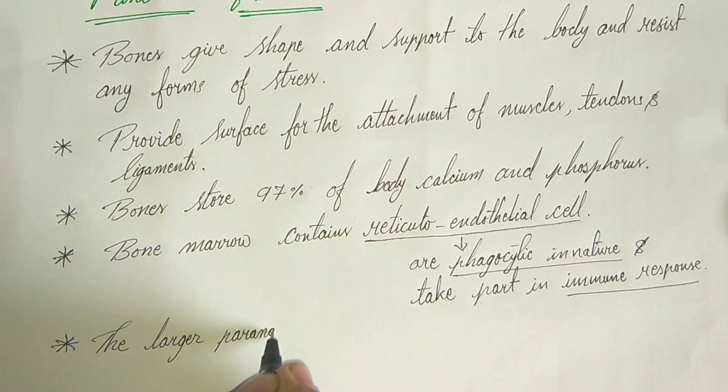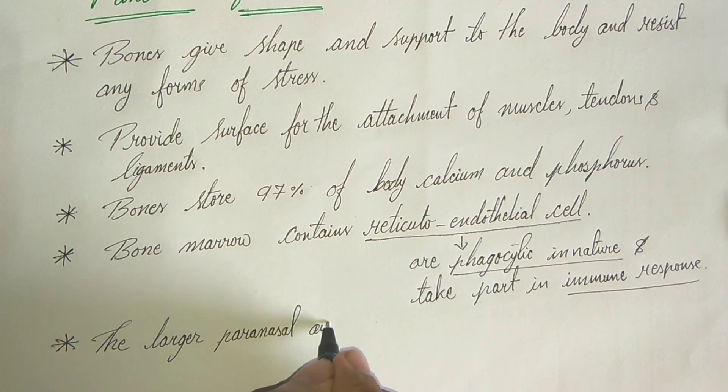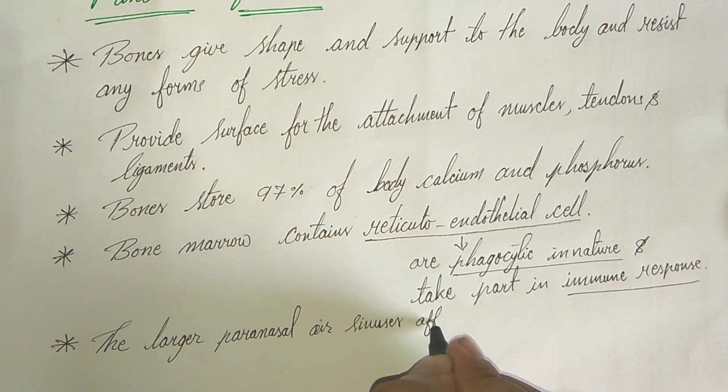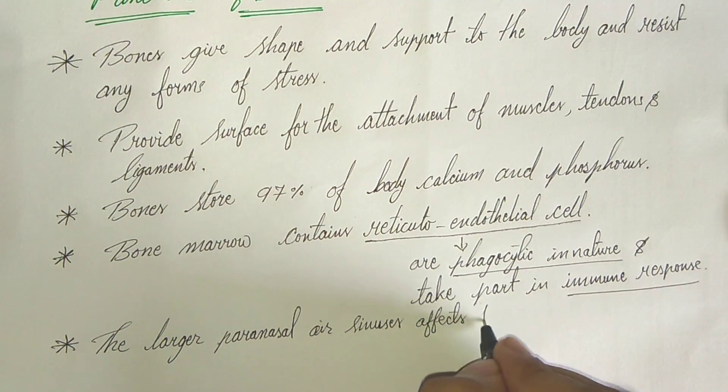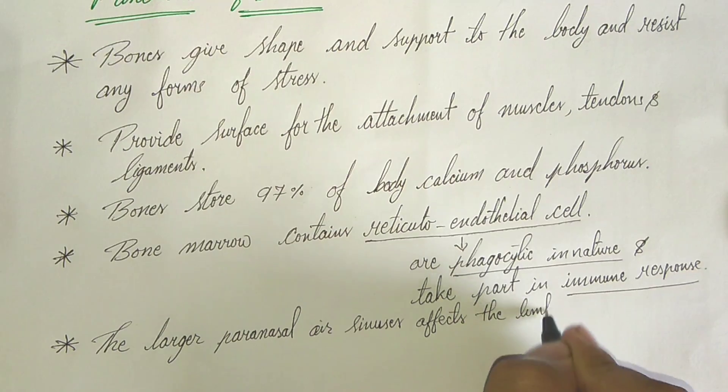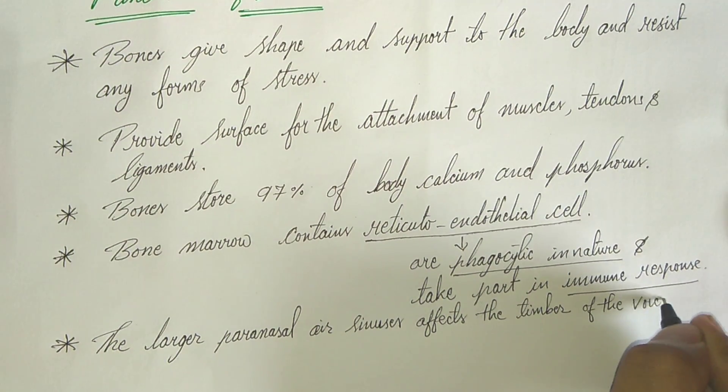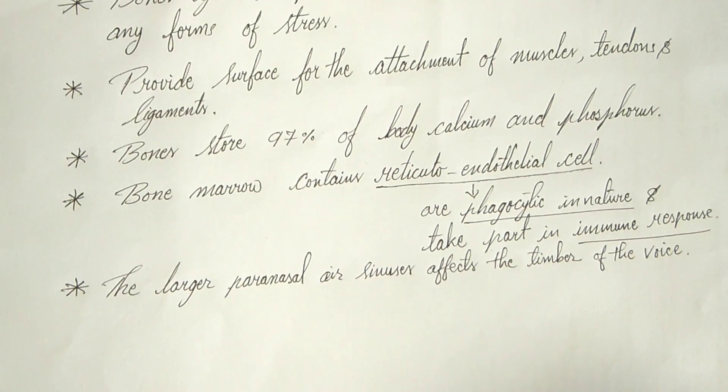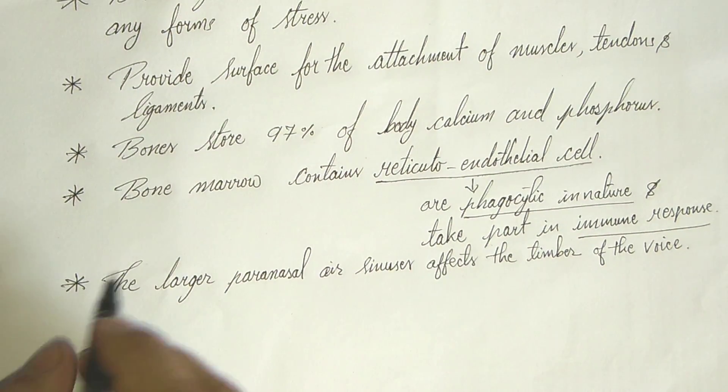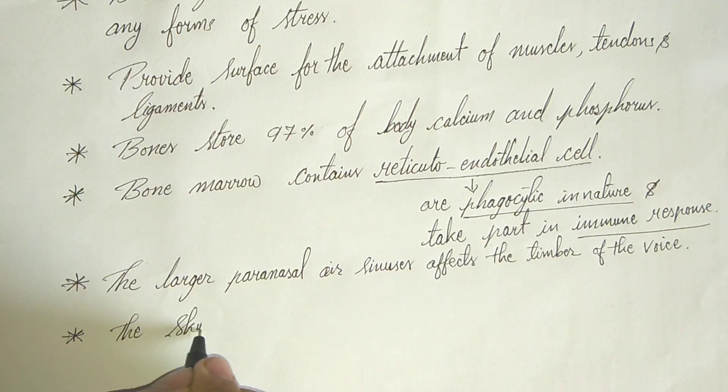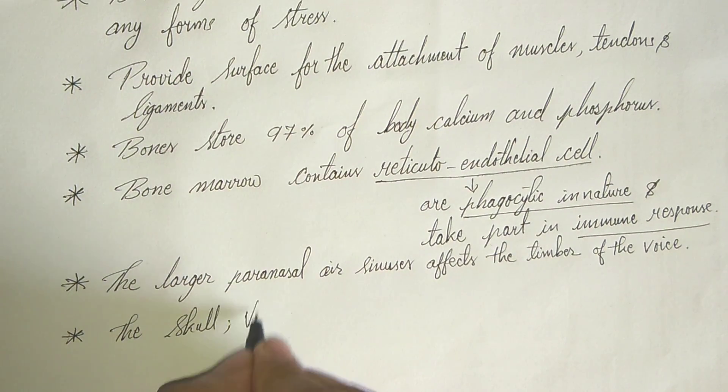Now come to the fifth function of bone. The larger the paranasal air sinus affects the timbre of voice. Here the timbre of voice means the quality given to a sound by an overtone. So larger the paranasal air sinus affects the timbre of voice.